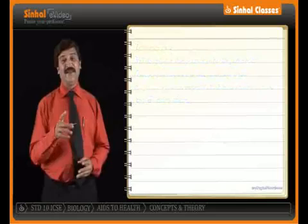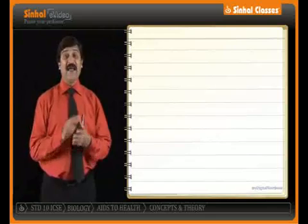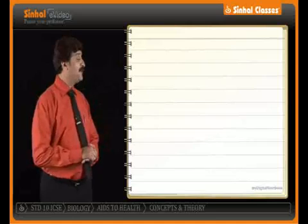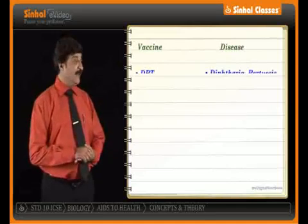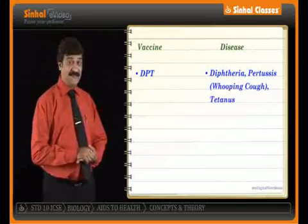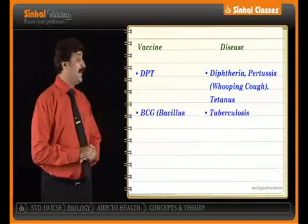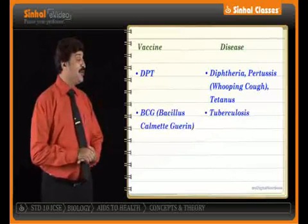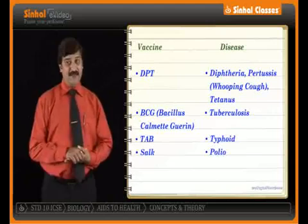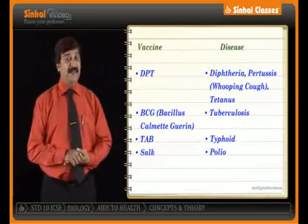In this chapter on AIDS to health, we need to know the names of a few vaccines and the diseases they protect against. DPT is given for diphtheria, pertussis (whooping cough), and tetanus. BCG, or Bacillus Calmette-Guérin, is given for tuberculosis. TAB is given for typhoid, and Salk vaccine is given for polio.